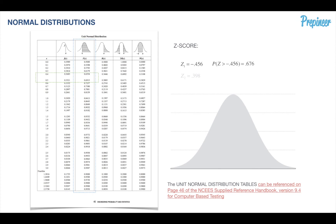On the normal distribution bell curve, the total area under the curve equals 1. From positive infinity back to the z-score of negative 0.456, the area in blue equals 0.676 — meaning 67.6% of the area under the normal distribution curve falls within that range.